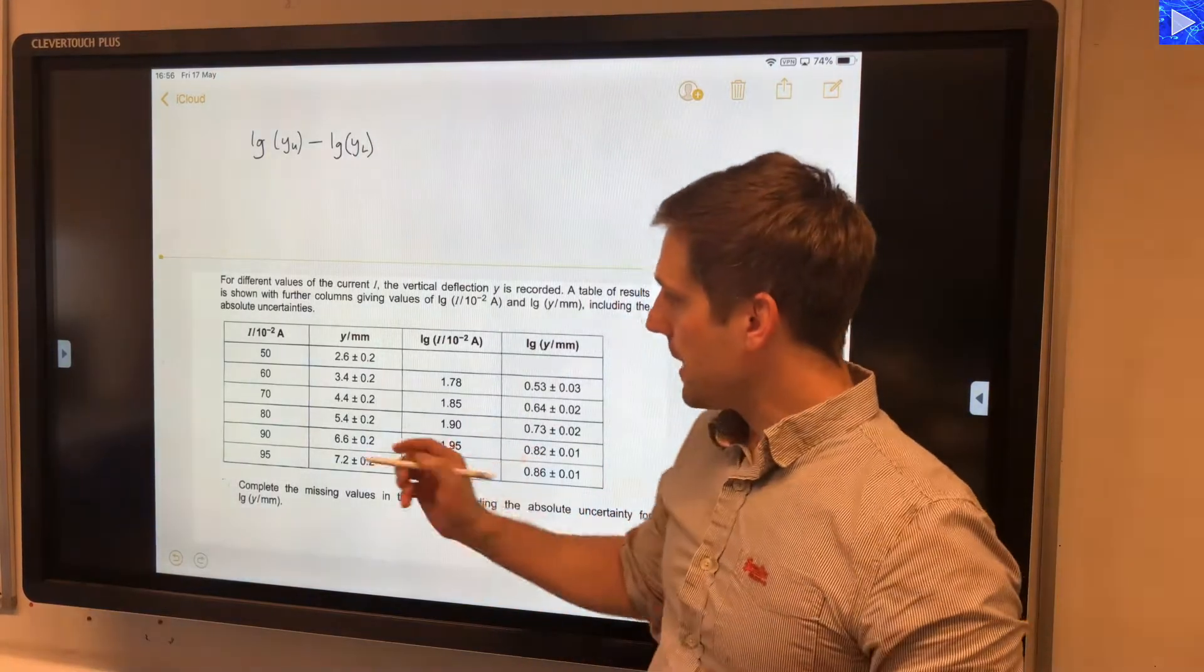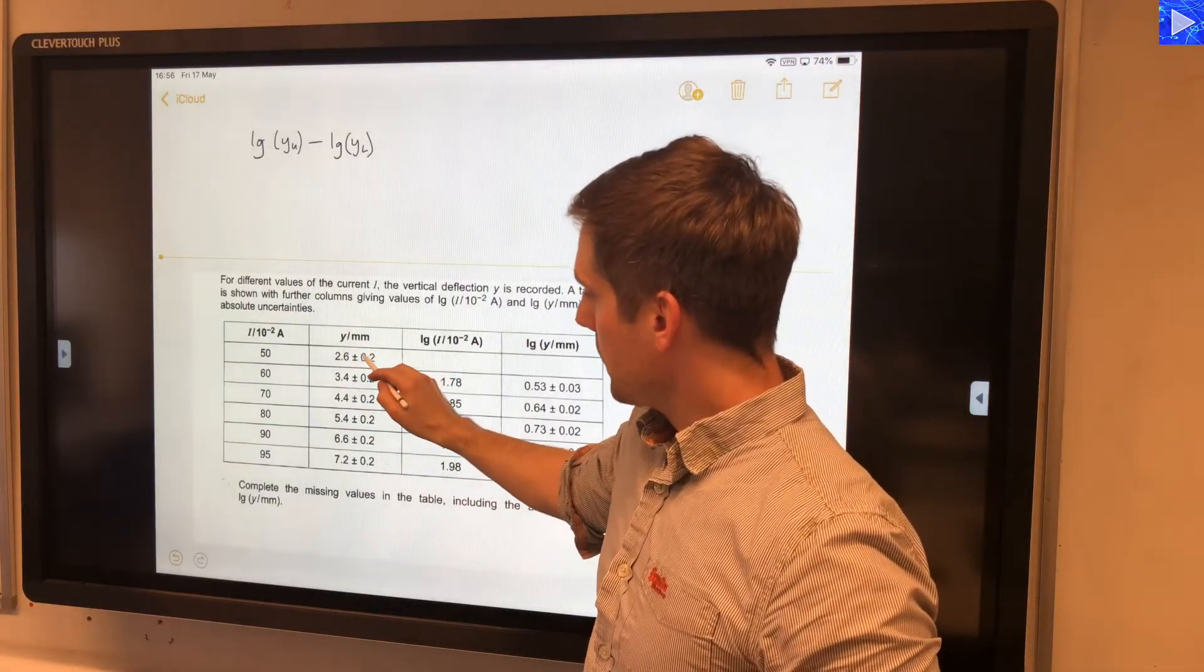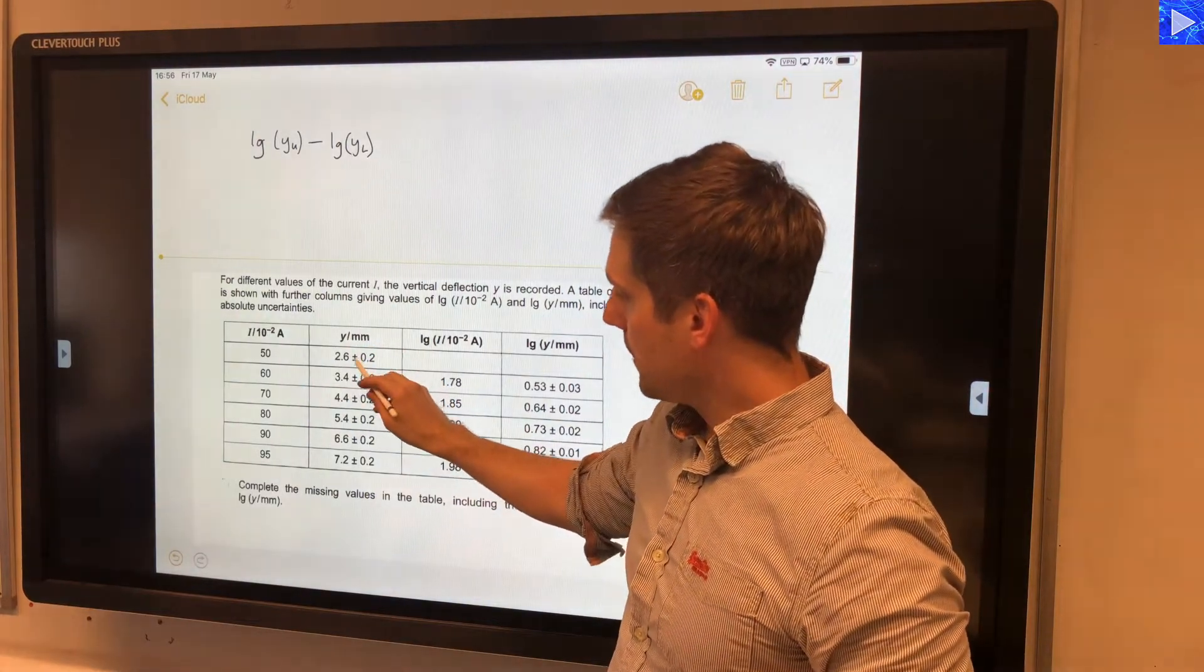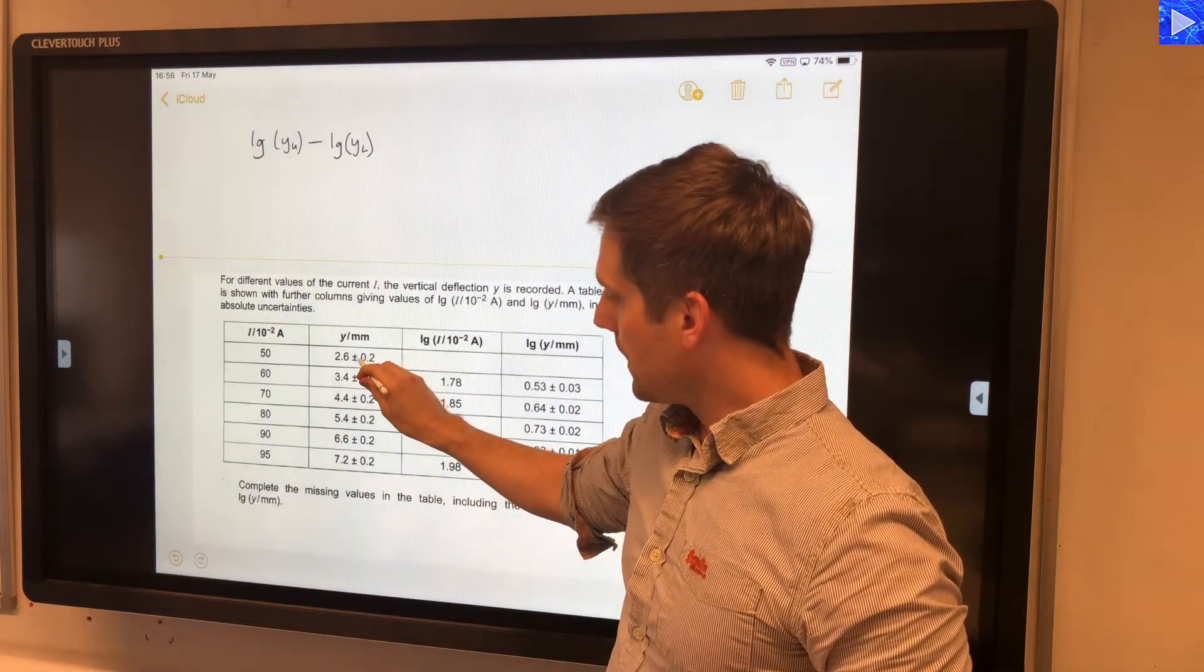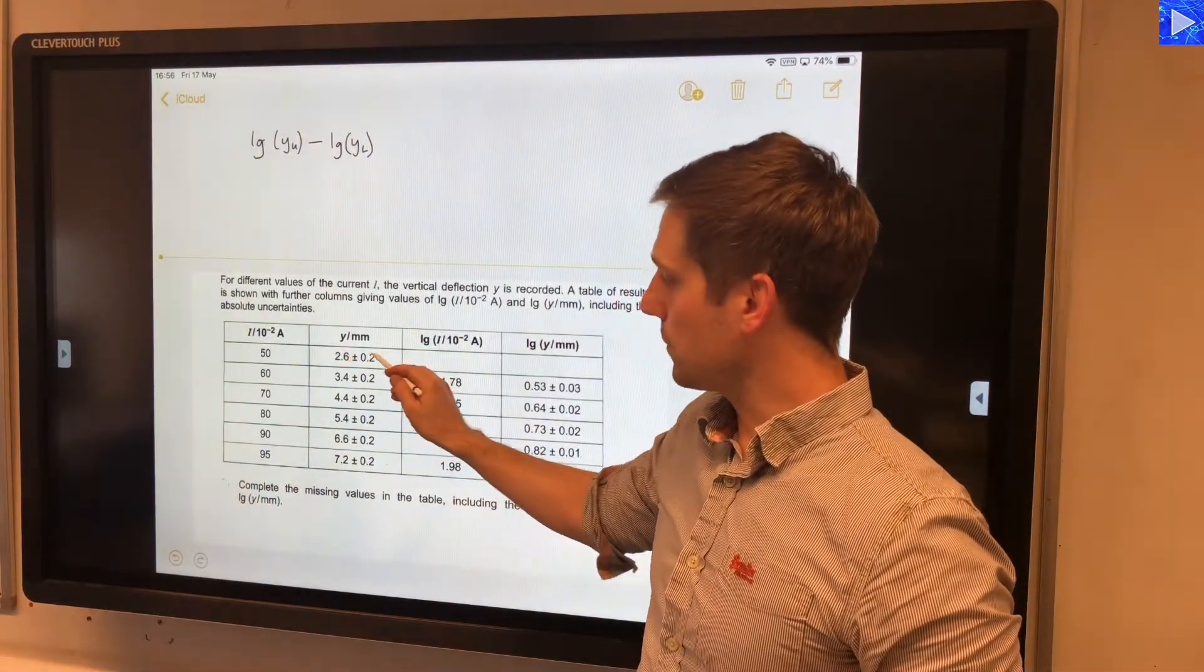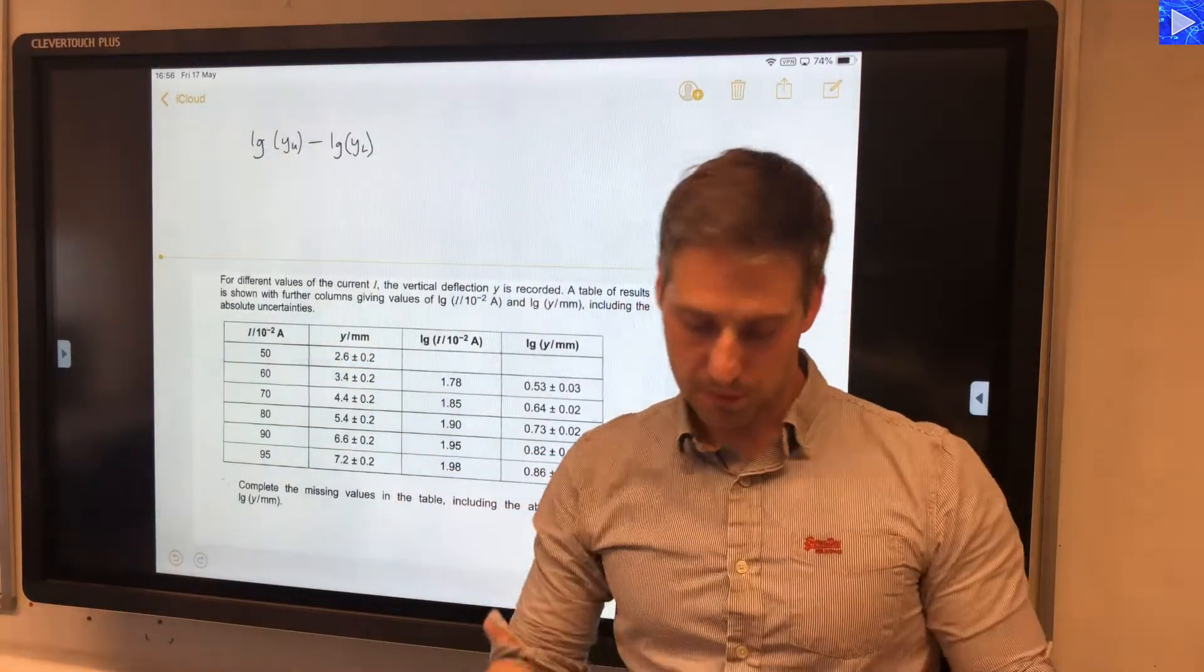So what I mean by that is, we're looking at our y value, we're taking the upper value by adding the absolute uncertainty in y, and then we are taking away the absolute uncertainty from y to get the lower value. So the upper value is 2.6 plus 0.2, and the lower value would be 2.6 minus 0.2.